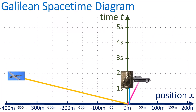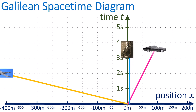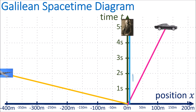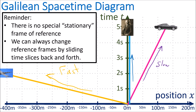So in summary, a spacetime diagram helps us track the motion of objects through space and time. A vertical world line means the object is stationary, and a diagonal world line means the object is moving at a constant speed. A world line closer to the vertical means the object is traveling slower, and a world line closer to the horizontal means the object is traveling faster. Also remember that there is no such thing as a special stationary frame of reference, and we can always change the frame of reference in a Galilean spacetime diagram by moving the time slices back and forth.